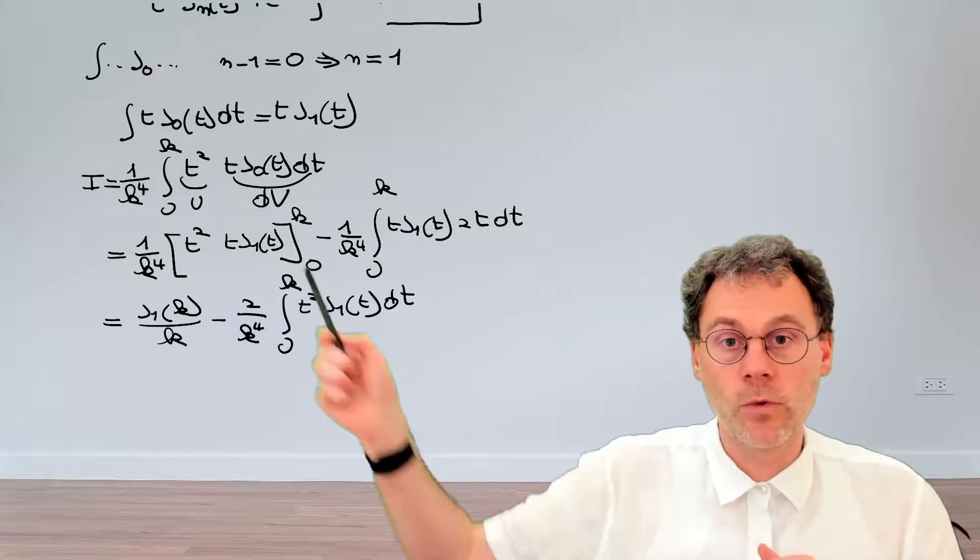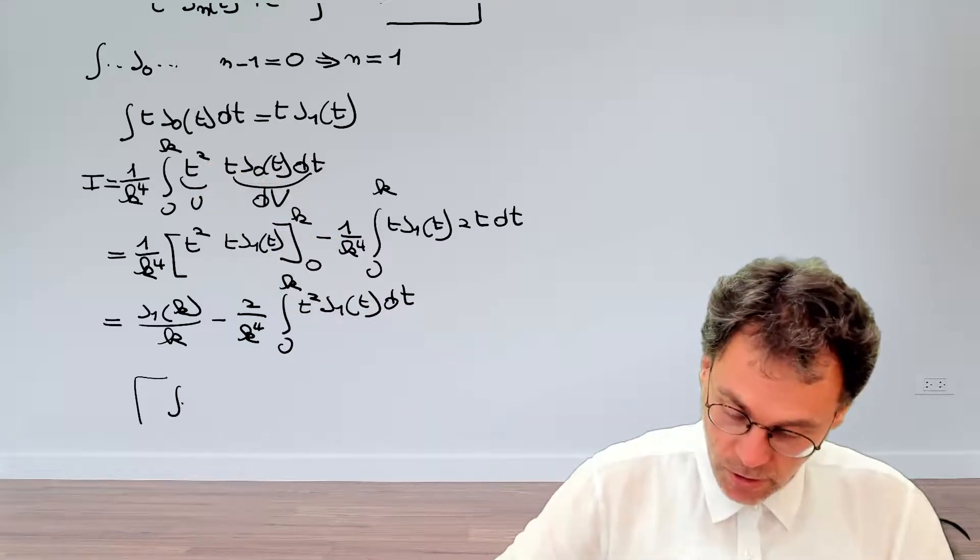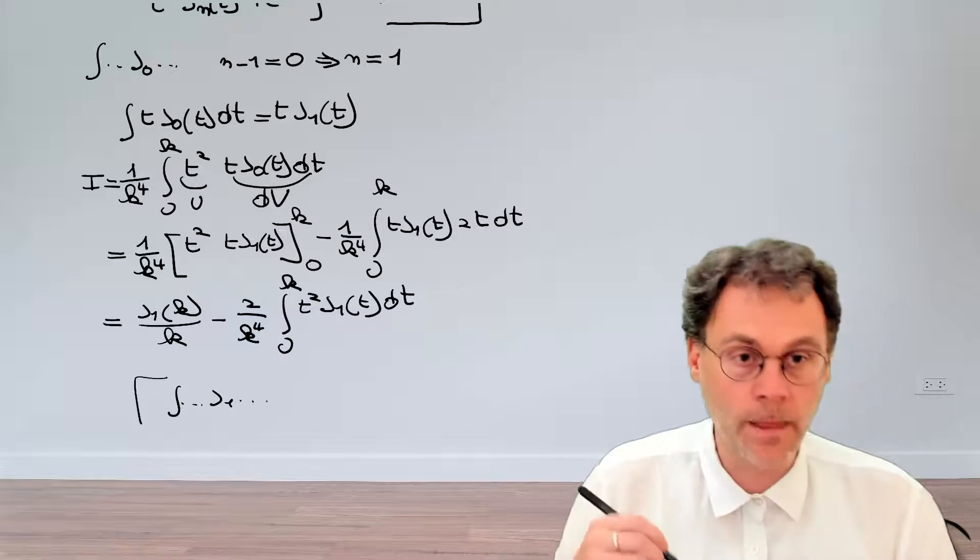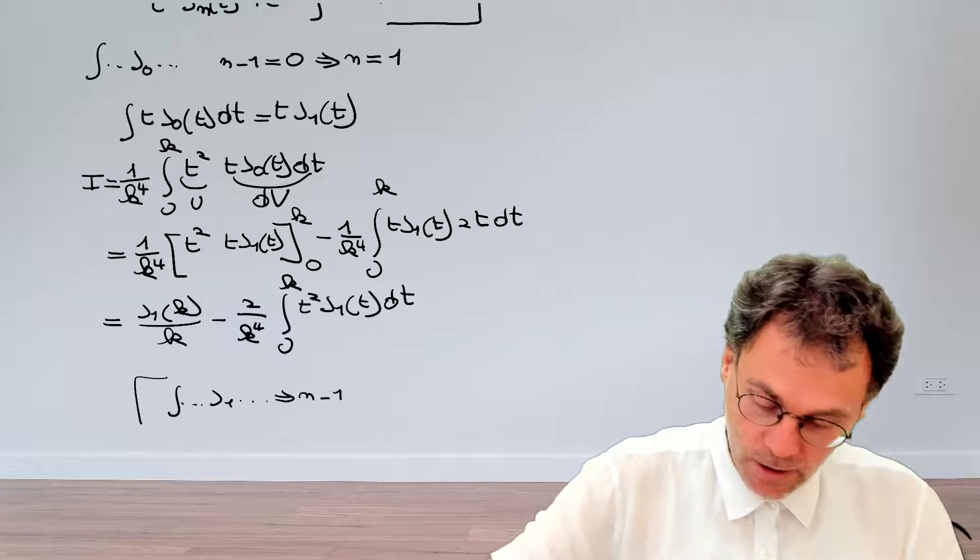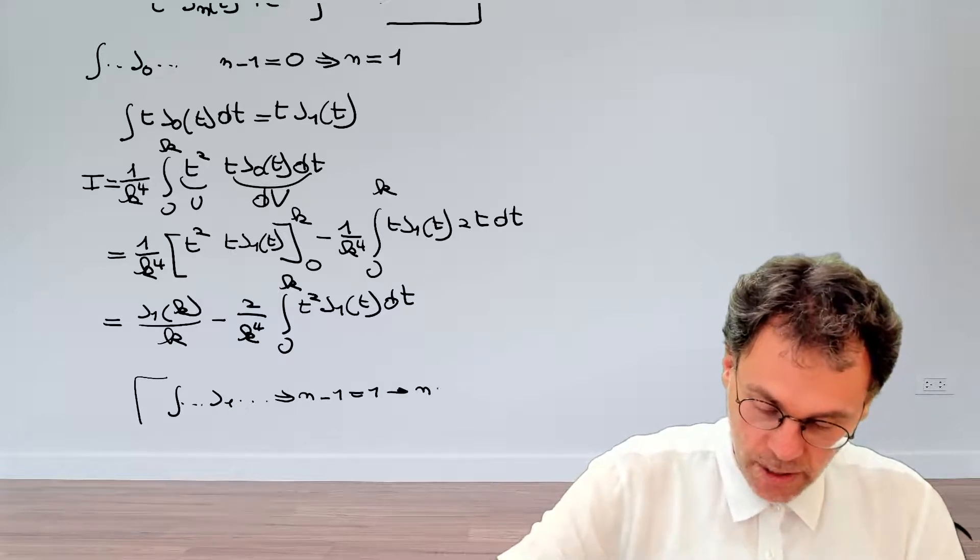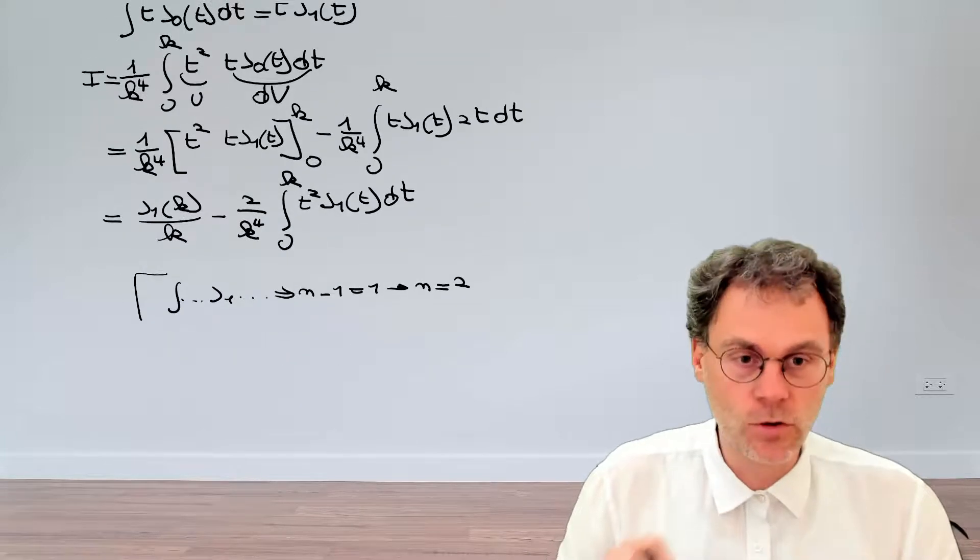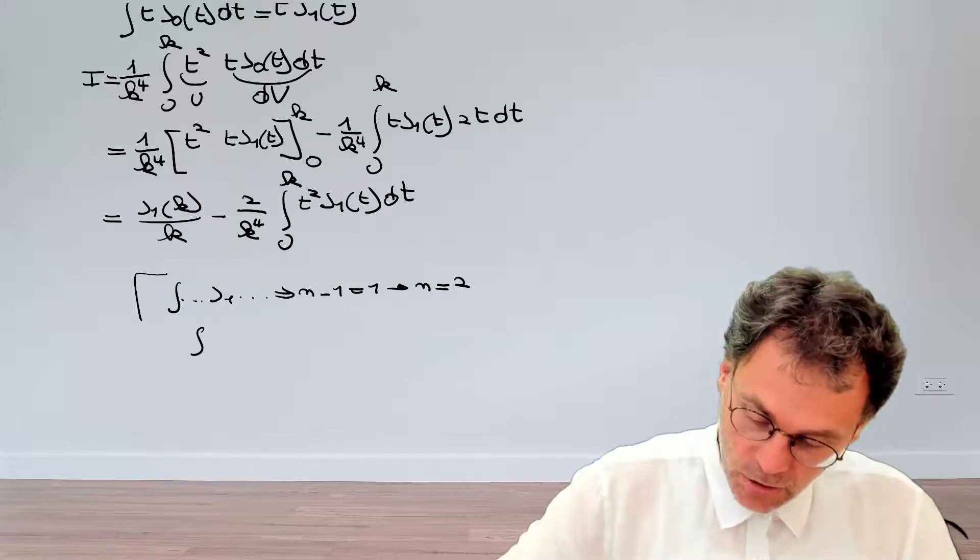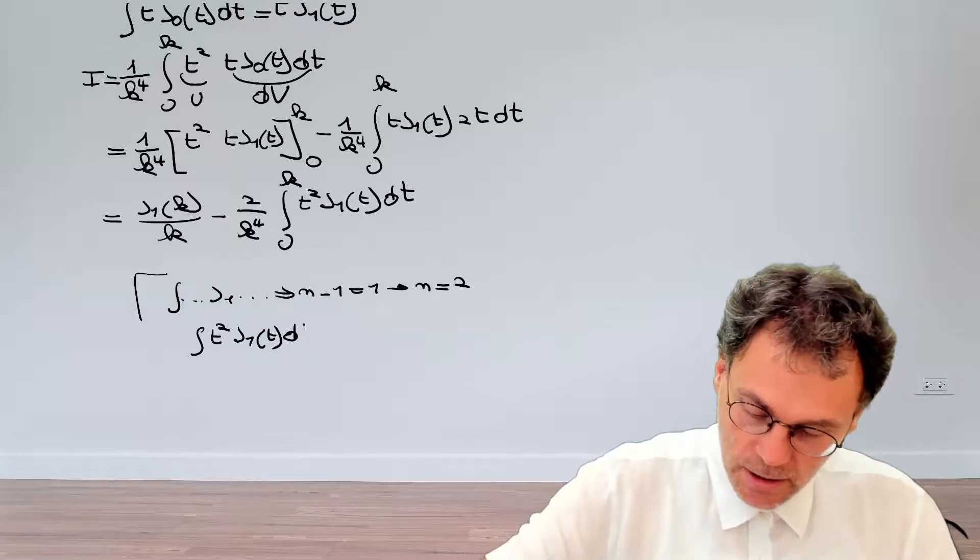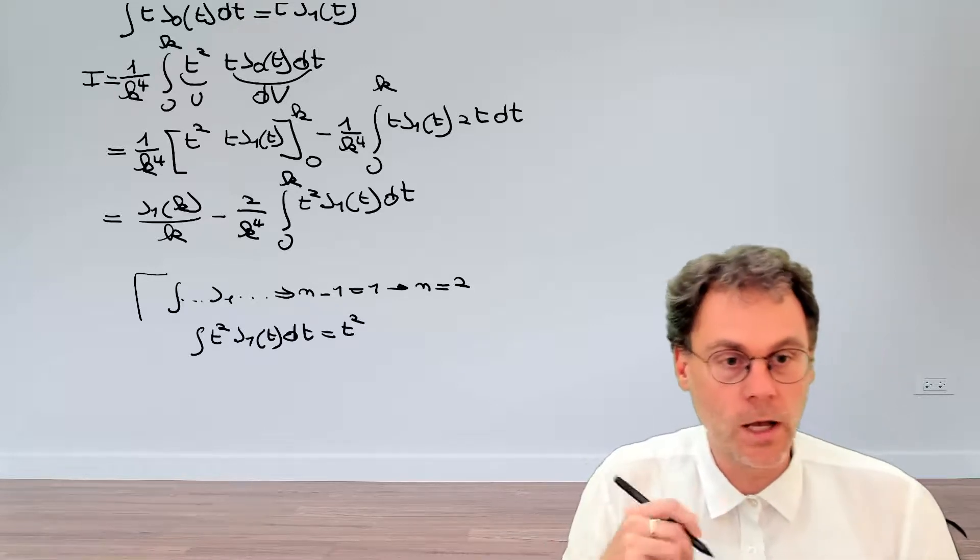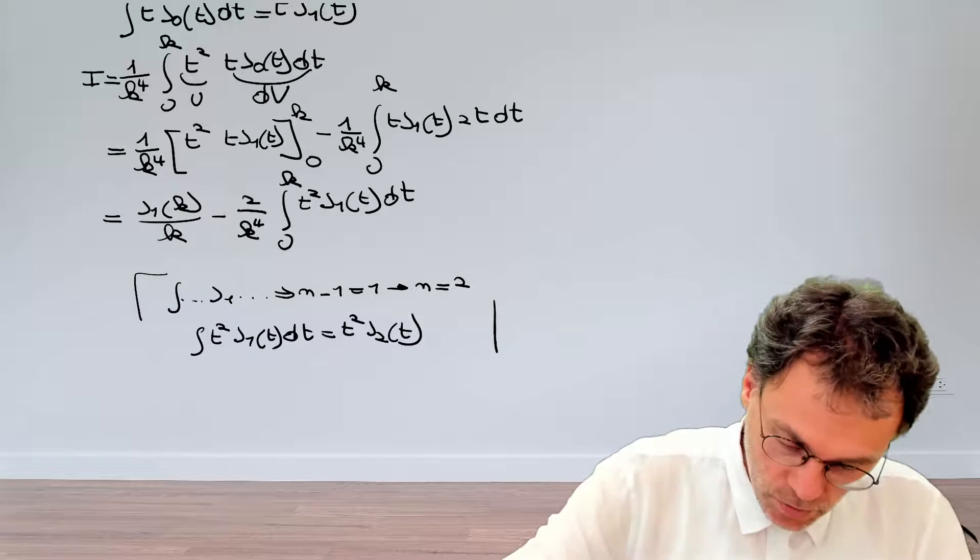So last time we had an integral involving Bessel functions of order 0. This time we have an integral involving Bessel functions of order 1. But in a very similar way, we can derive that this time our n minus 1 should be equal to 1. So therefore, n should be equal to 2. And if we substitute n equal to 2 into our formula, then we get that the integral of t^2 J_1(t) dt is equal to t^2 J_2(t). So that's what we're going to use here.